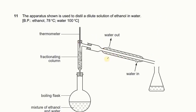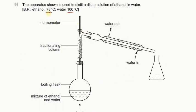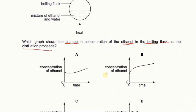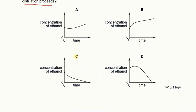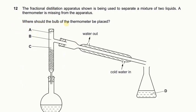A question about fractional distillation of ethanol and water with their boiling points given. Since ethanol has a lower boiling point (78°C) it will boil off first, so its concentration in the boiling flask will decrease with passage of time. The graph showing decreasing concentration is C. For thermometer placement, the bulb of the thermometer should be at the point where vapors are just leaving the fractionating column. So B is the correct place.